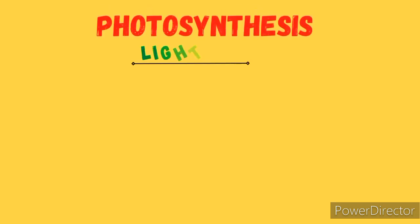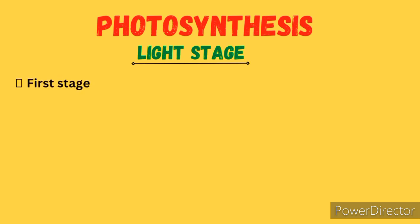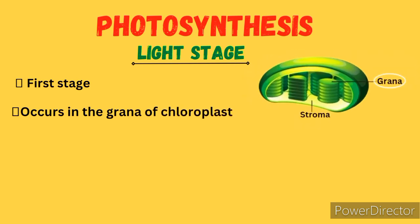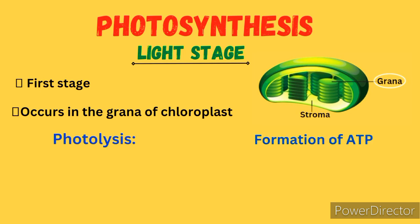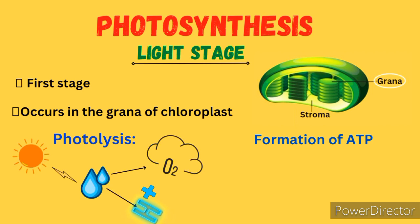The process of photosynthesis occurs in two stages. The first stage is the light stage; the second is the dark stage. The light stage occurs in the grana of the chloroplast, where the chlorophyll molecules are, and this stage requires light in order to take place. Two main processes occur in the light stage: the first is photolysis, and the second is the formation of ATP. Photolysis is a process whereby water molecules are split using light energy to form two products: hydrogen atoms and oxygen gas.